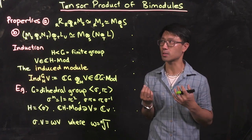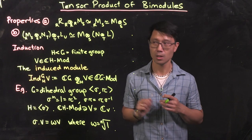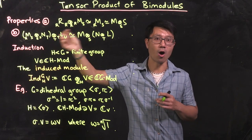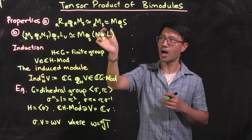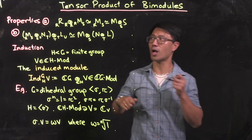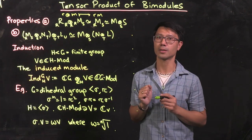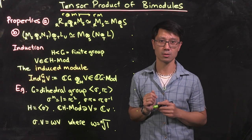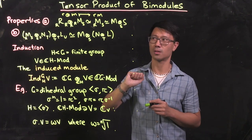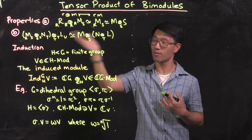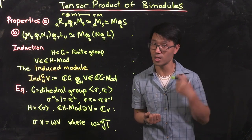For tensor products of vector spaces, we have a unit property and associativity property — something that doesn't hold for general tensor products of modules alone. Now with tensor products of bimodules, we do have those properties. The unit property: if M is an R,S-bimodule, then R is an R,R-bimodule and R ⊗_R M ≅ M as R,S-bimodules, via the usual isomorphism r ⊗ m ↦ r·m. Similarly, M ⊗_S S ≅ M. These are very useful for calculating tensor products.